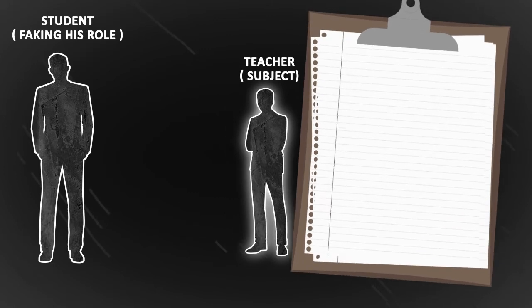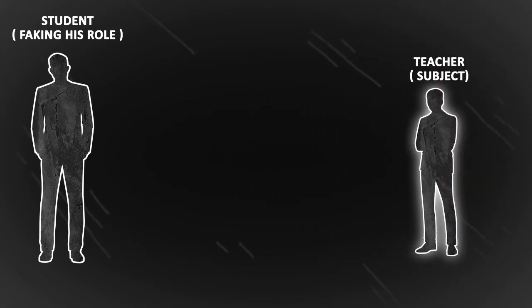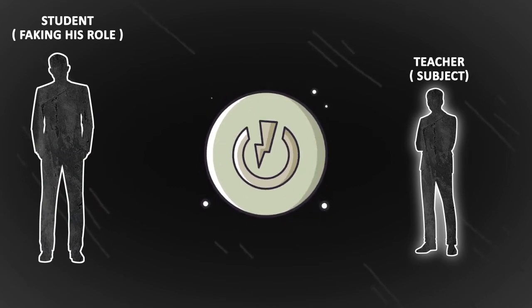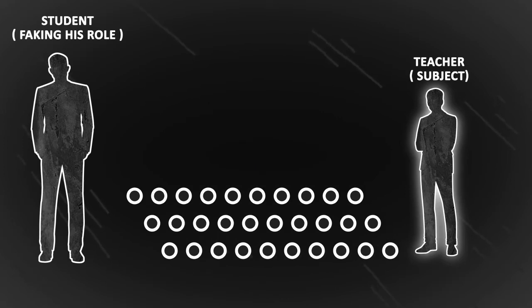The teacher, who is actually the subject of this experiment, is then told to administer an electric shock every time the student makes a mistake. This increases in level each time that there is an incorrect answer. There were 30 switches on this shock generator, and they ranged from 15 volts to 450.